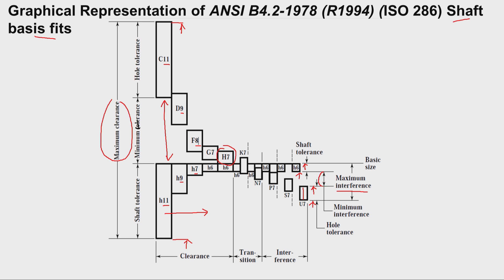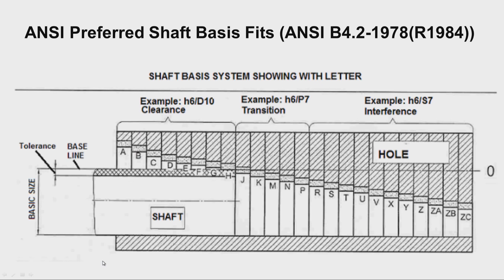The minimum interference and maximum interference are shown graphically. Depending on the hole and shaft combination selected, we can get clearance fit, transition fit, or interference fit. The ANSI preferred shaft basis fits (ANSI B4.2) fix the basic shaft size with its tolerance, and we vary the holes. The zero line corresponds to the basic size of the shaft, so deviation is 0.